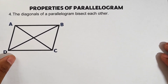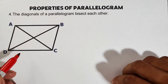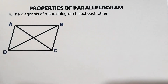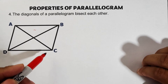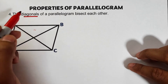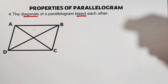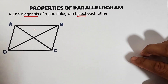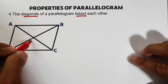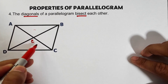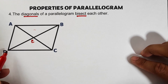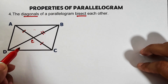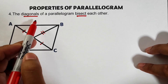The fourth property: the diagonals of a parallelogram bisect each other. We have diagonal AC and diagonal BD. In layman's terms, when the two diagonals intersect, they cut each other in half. The point of intersection is point E. In symbols, the segments on each diagonal are marked equal — meaning the diagonals bisect each other.